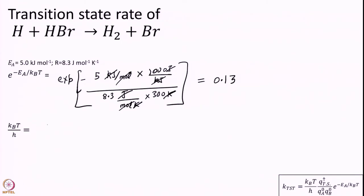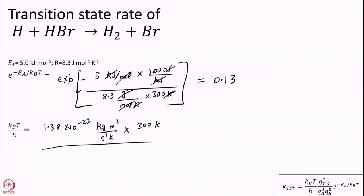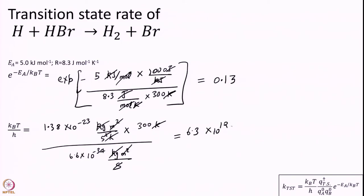kT/h = (1.38 × 10⁻²³ kg·m²·s⁻²·K⁻¹ × 300 K) / (6.6 × 10⁻³⁴ kg·m²·s⁻¹). Kelvin cancels with Kelvin, kilogram cancels with kilogram, meter squared cancels, and one second cancels, leaving units of s⁻¹. This gives kT/h = 6.3 × 10¹² s⁻¹.